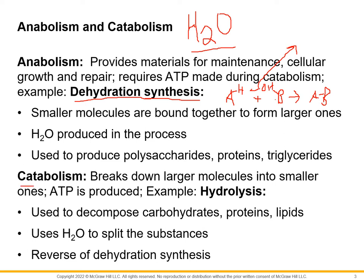On the opposite side, catabolism — the breaking down — is done by hydrolysis. Remember, lysis means to break down, and hydro means with water, so I'm breaking it down with water. So where anabolism is removing water, catabolism is the reverse: I'm breaking this down because I'm taking water and jamming it into this bond, breaking it and putting one hydrogen here and one hydroxyl group over there. So anabolism is done by dehydration synthesis, and catabolism is done by hydrolysis.